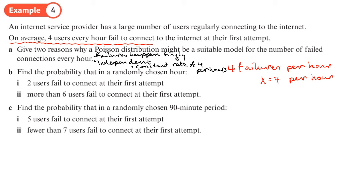Part b, find the probability that in a randomly chosen hour, okay so we'd expect four to happen an hour, two users fail to connect on their first attempt. Right, so this is where we start to use the notation and the probability that we did in the first section. So what we have here is a Poisson distribution where it happens at four and I need to put here that this is per hour just in case you want to scale it up or down.